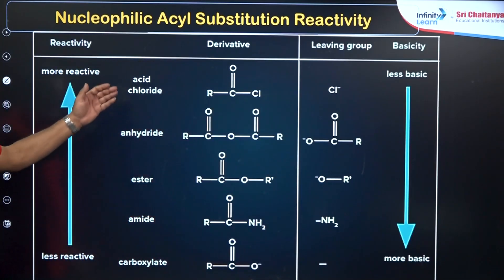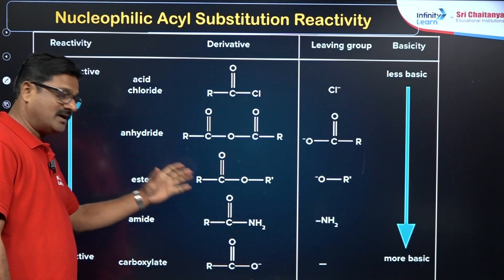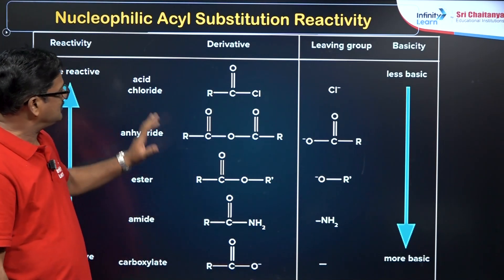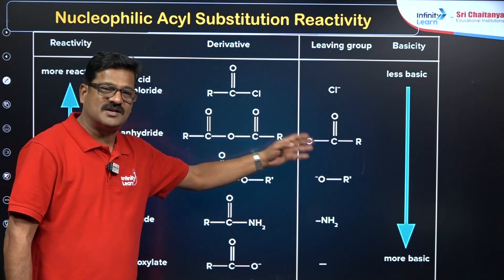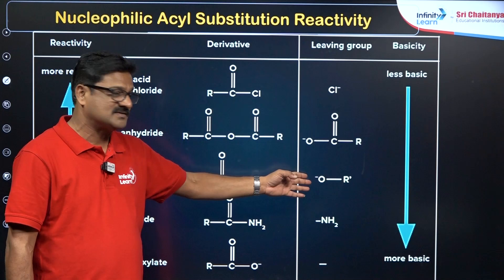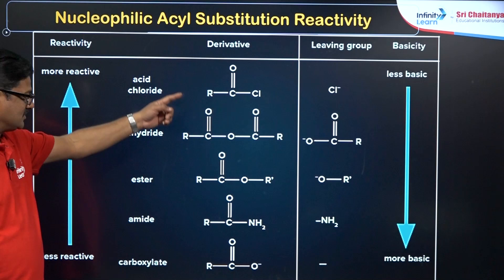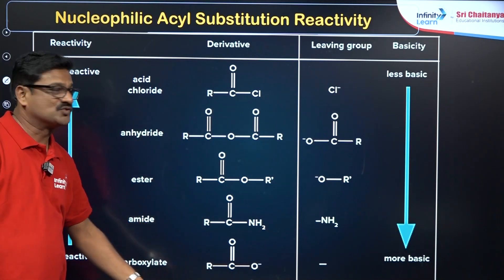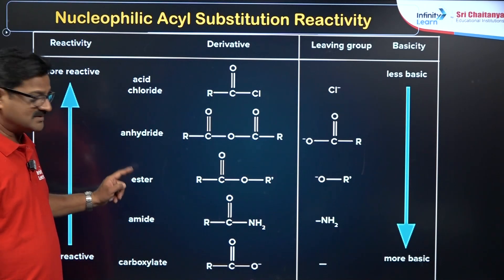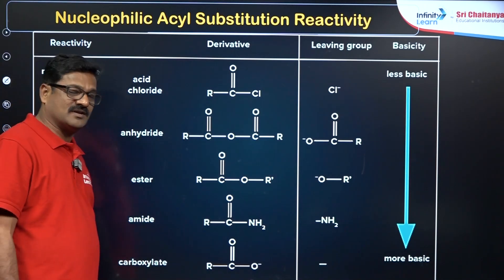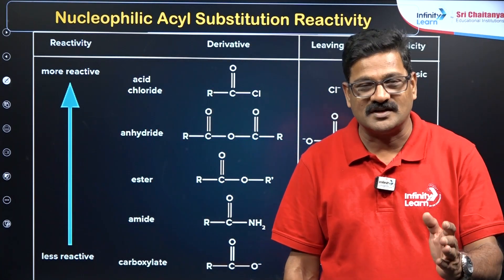The key principle: weak bases are better leaving groups. Looking at the series — acid chloride, acid anhydride, ester, amide, carboxylate — when the leaving group is Cl⁻ it is the weakest base; carboxylate is a moderate base; alkoxide is a stronger base. So basic strength increases down the series and reactivity decreases: acid chloride > acid anhydride > ester > amide > carboxylate.